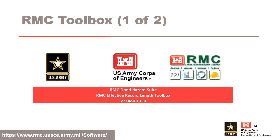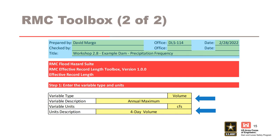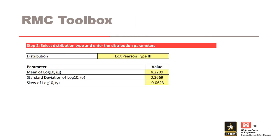Now I'm going to introduce you to the RMC Effective Record Length Toolbox and give you a brief overview of how it works. In typical RMC Toolboxes, the yellow cells are input cells. At the top of each worksheet, you'll see a location to enter basic information to document your project. In Step 1, you'll enter basic information documenting the variable you're modeling and the units used for your frequency analysis. In Step 2, you can enter the distribution parameters for your frequency curve — these would be the posterior mode values from your Best Fit analysis.